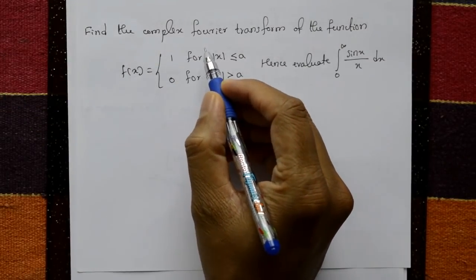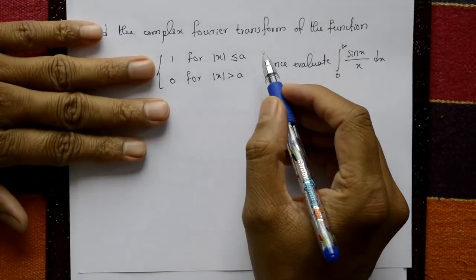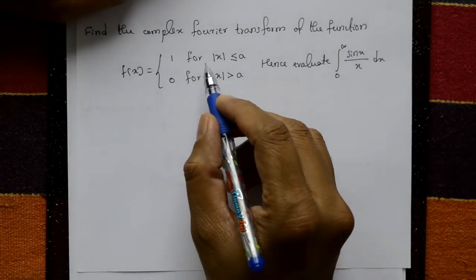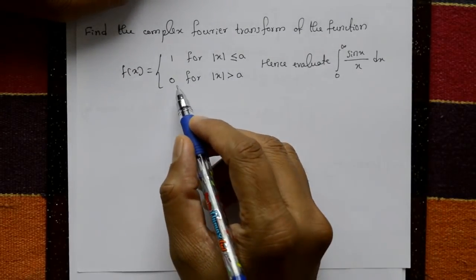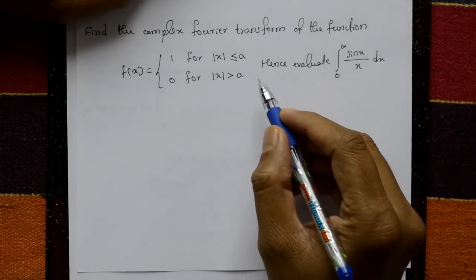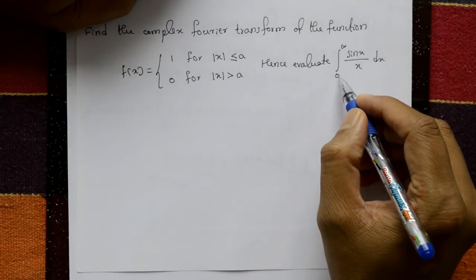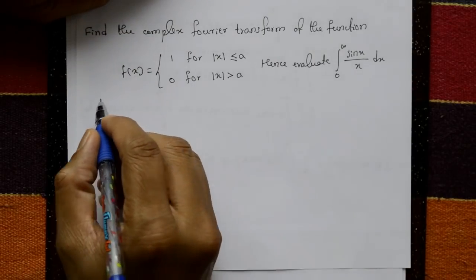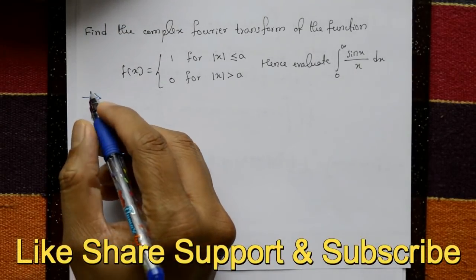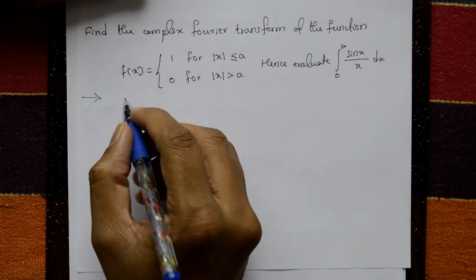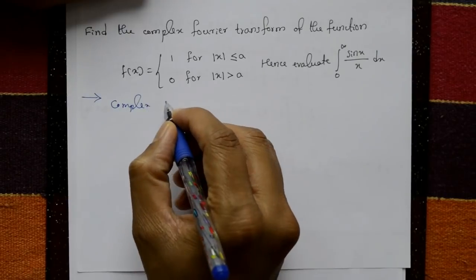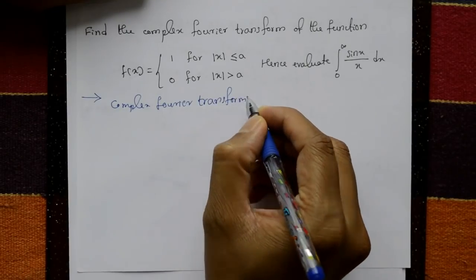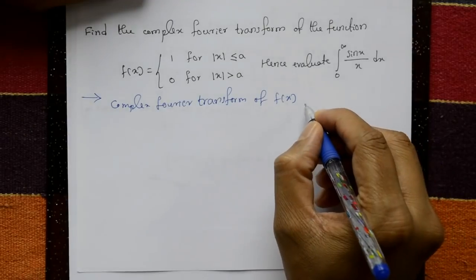Find the complex Fourier transform of the function f(x), where f(x) equals 1 for |x| ≤ a and 0 for |x| > a. Hence evaluate the integration from 0 to infinity of sin(x)/x with respect to x.